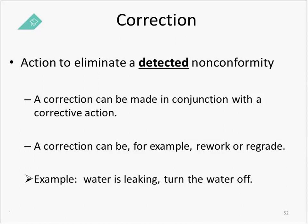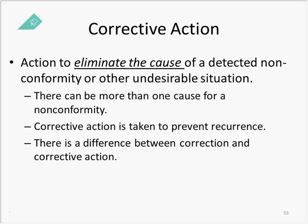A correction is an action to eliminate a detected nonconformity, and can be made in conjunction with a corrective action — for example, rework or regrading. If you have water leaking, turning the water off is the correction — the first thing you do. A corrective action is an action to eliminate the cause of a detected nonconformity or other undesirable condition. There can be more than one cause, so make sure you are taking action to prevent reoccurrence.